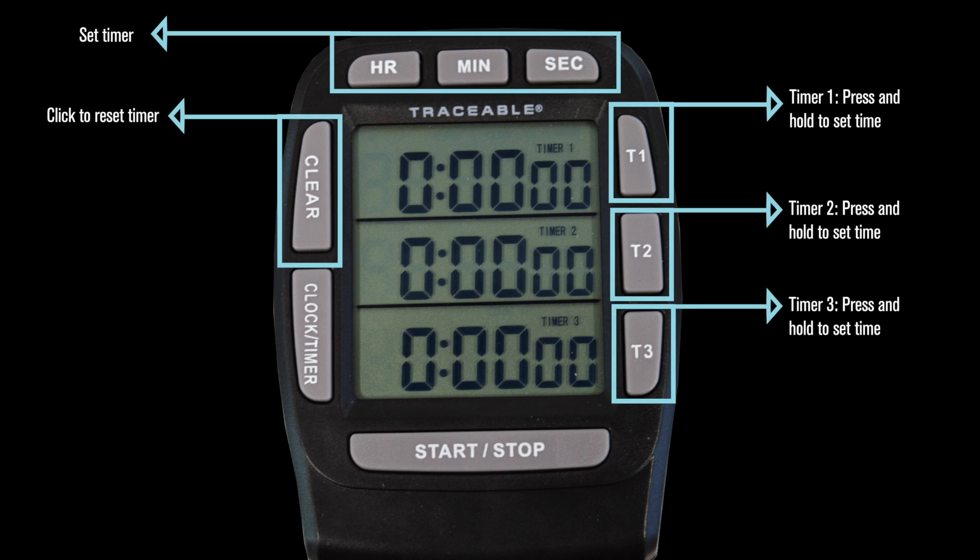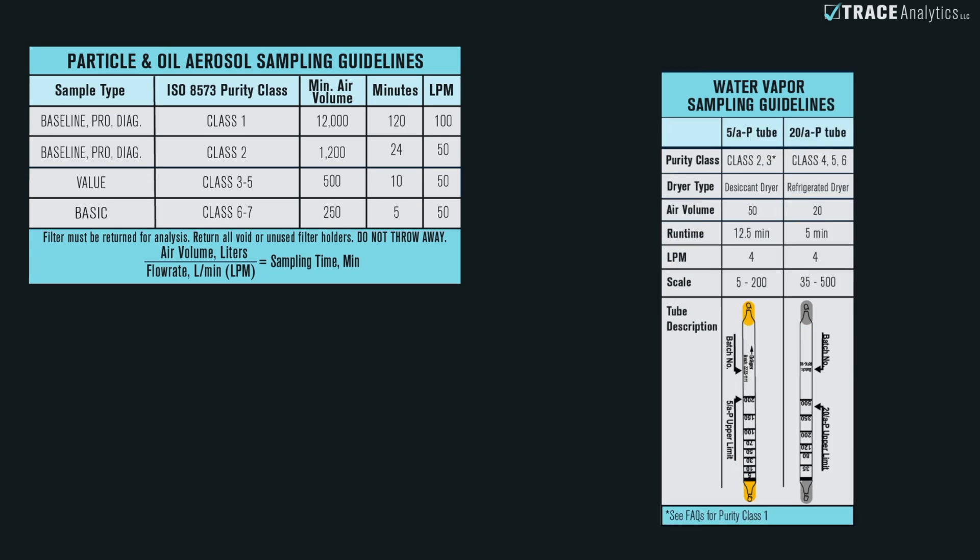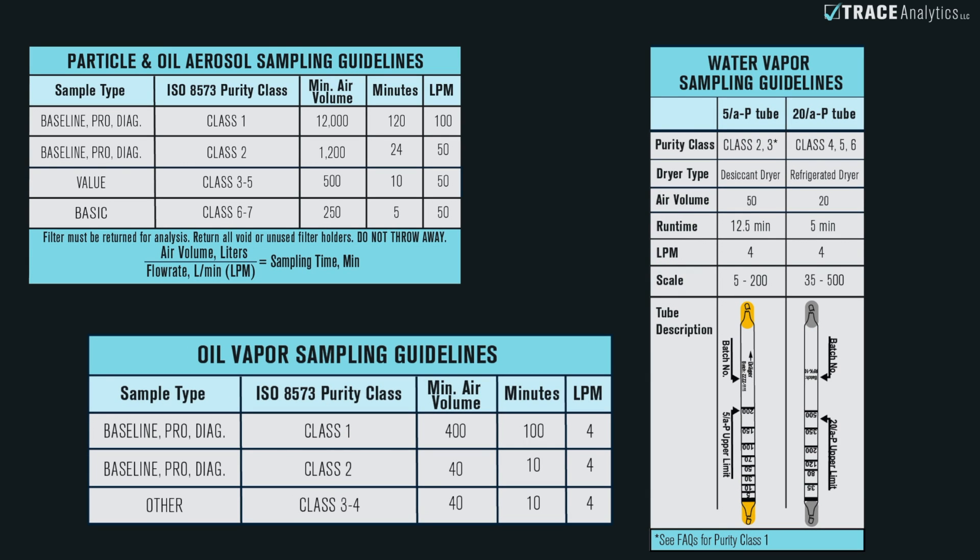Upon opening your calibrated timer, take a moment to become familiar with the display functions. When testing for particles, water, and oil, refer to the appropriate sampling preferences chart located within each step for your total run times.